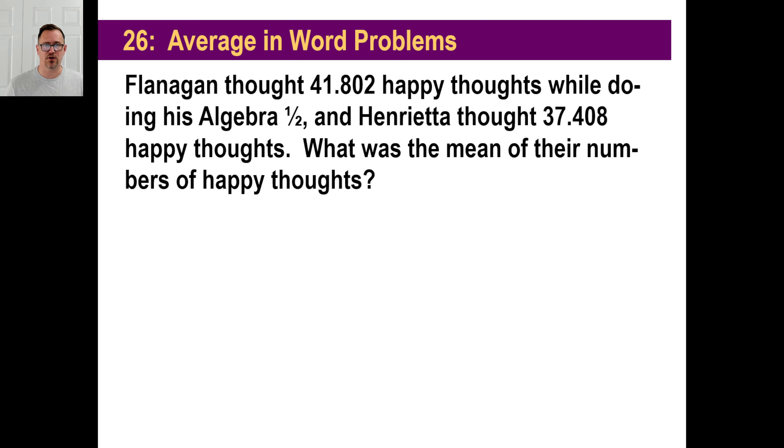Let's look at another one. Flanagan thought 41.802 happy thoughts while doing his algebra one half. Henrietta thought 37.408 happy thoughts. What was the mean of their numbers of happy thoughts? And again, we won't bother to do this. How do you find the mean? What's the mean another word for? I'll give you a hint. I mean mean is the same thing as something. I'll give you a little bit of it here. If you just connect the dots there. Now, oh yeah, that's it. Average.